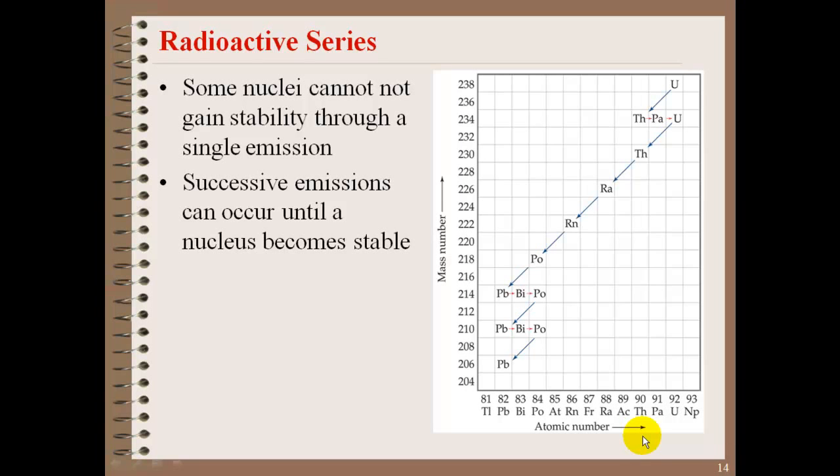You'll notice here with these blue arrows, these are all alpha emissions. And then the red arrows here, these are all beta.